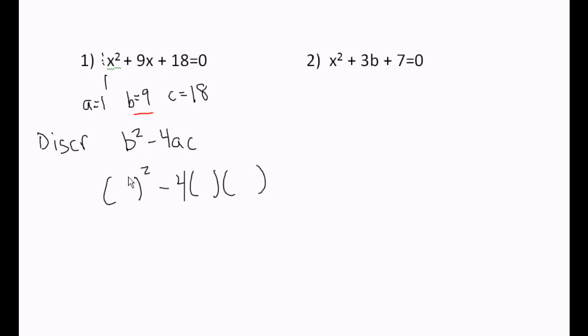Put the correct number in the correct parenthesis. b squared, b was 9, minus 4 times a, a was 1, times c, and c is 18.